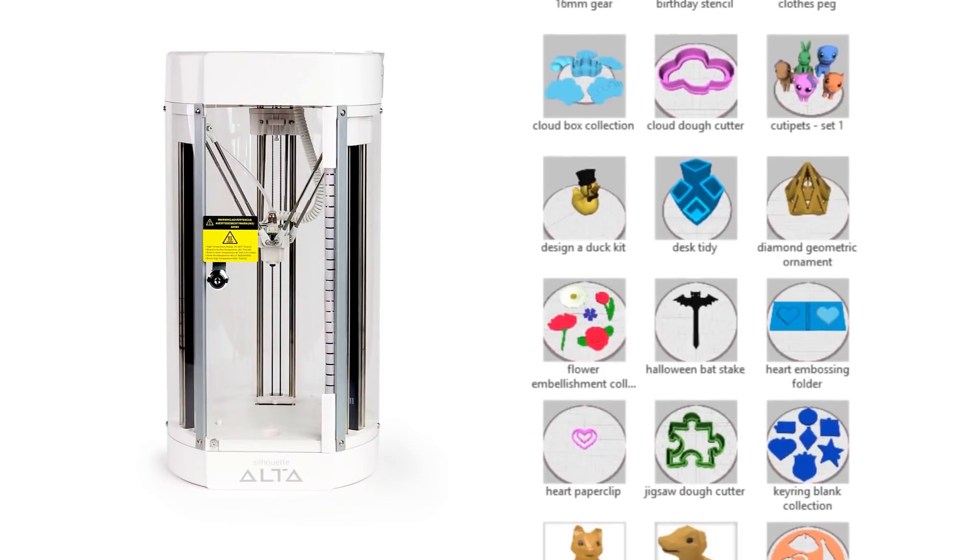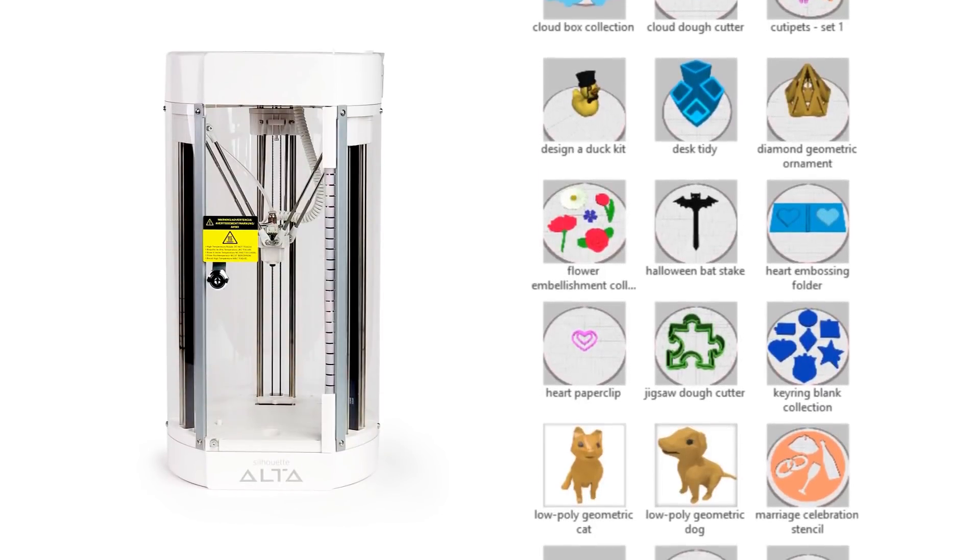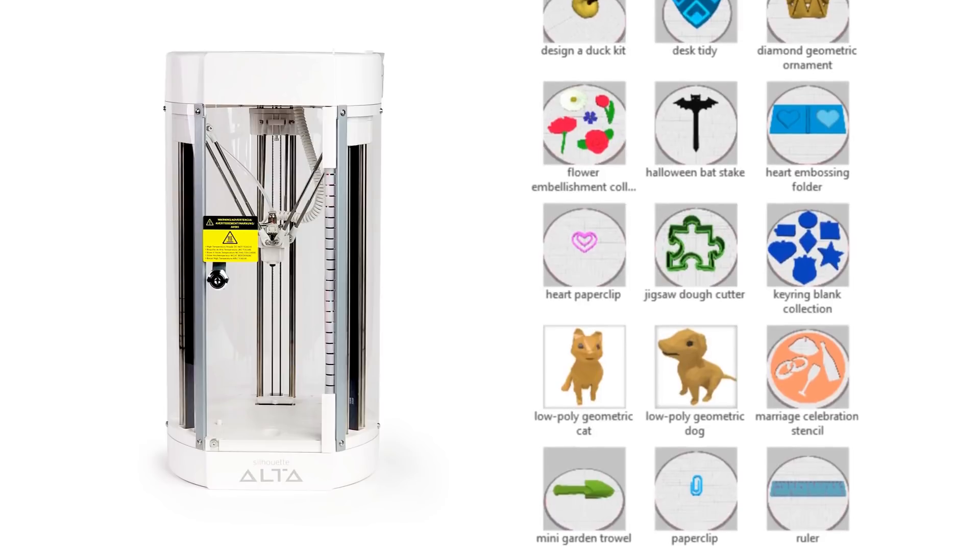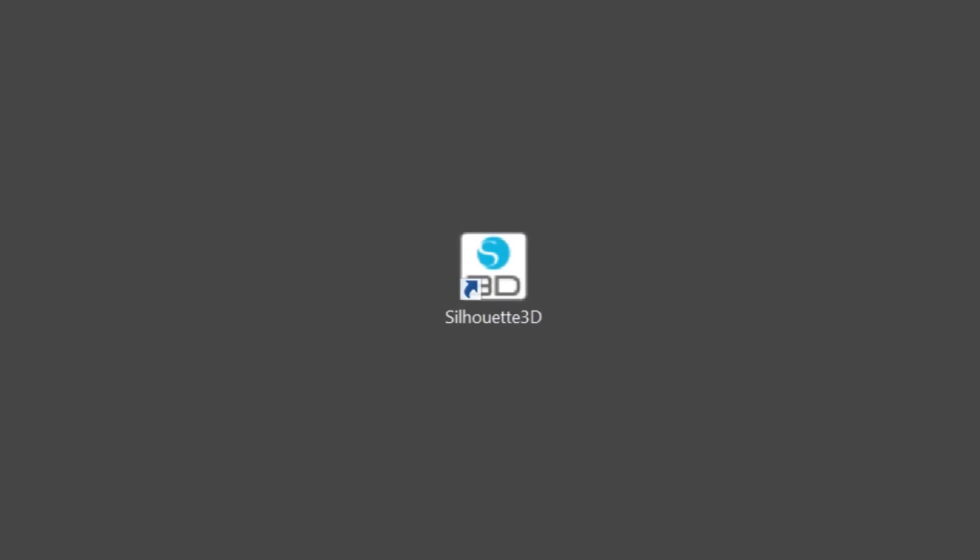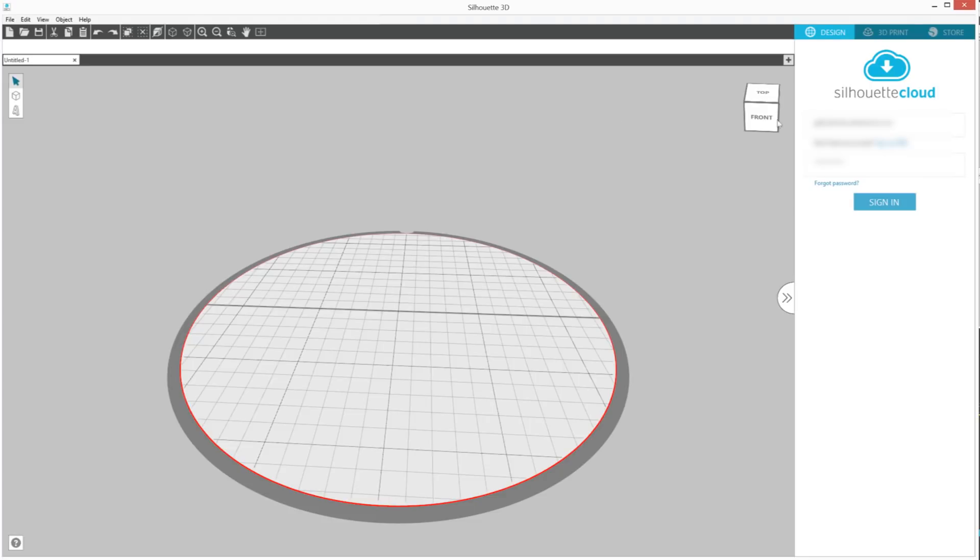Access the free designs for your Silhouette Alta. Your Silhouette Alta comes with 25 free designs you can print. These designs will appear in your Silhouette Library when you register your new machine. To access your library, open Silhouette 3D. Make sure you have the tab open.